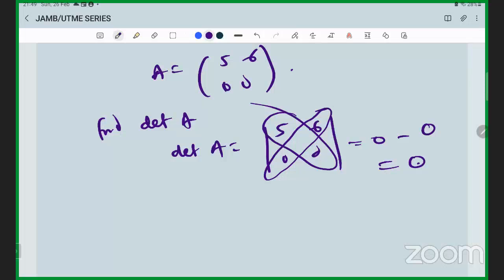Zero minus zero equals zero. So the determinant is zero. A matrix with determinant zero is called a singular matrix. So if A is a singular matrix - this is what we call a singular matrix.